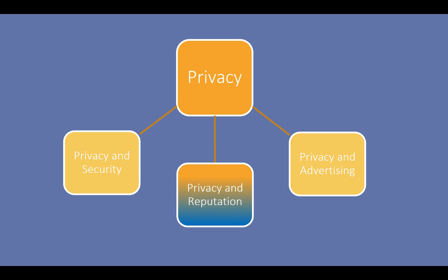This leads to the second area, which is privacy and reputation. This area involves being concerned about limiting the spread of embarrassing, hurtful, and harmful information about individuals in online spaces. Electronic aggression is a term used for harassment and bullying, or cyberbullying, that is done using electronic technology, and it has become quite a problem for children and adults. Electronic aggression is difficult to deal with because it can carry on 24-7 throughout the day and night, and harmful messages can spread like wildfire very quickly to many people in geographic locations.